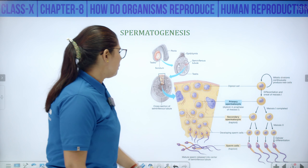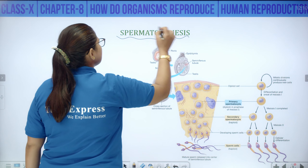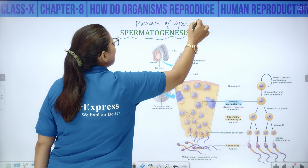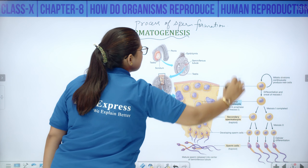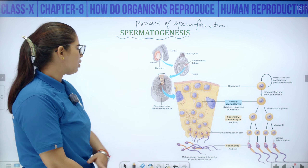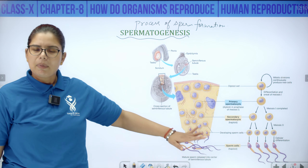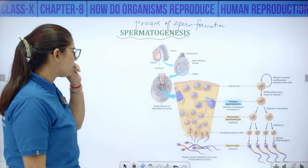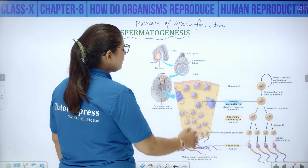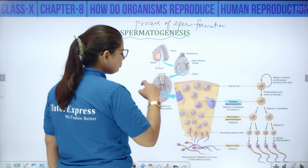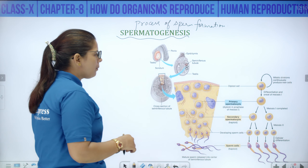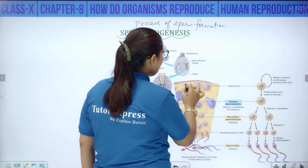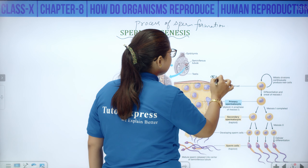Now let us look at the process of spermatogenesis — the process of sperm formation — known as spermatogenesis. This is a cross-section of the seminiferous tubule. Inside the testis are compartments — complex tubes called seminiferous tubules. Inside the seminiferous tubule you can see there are cells — the germinal epithelium.